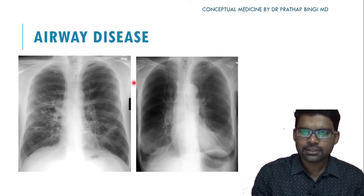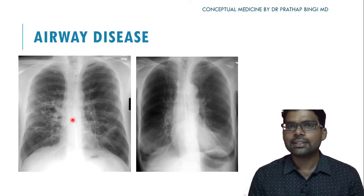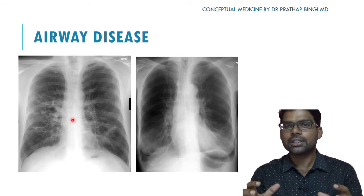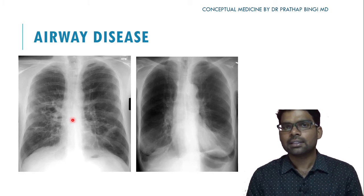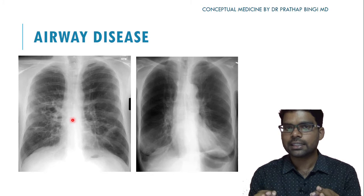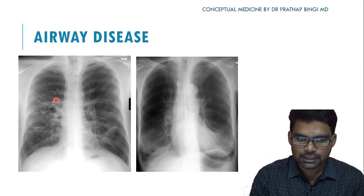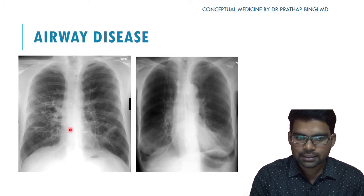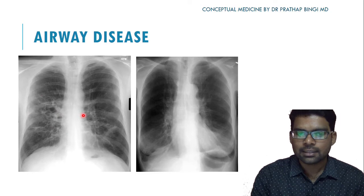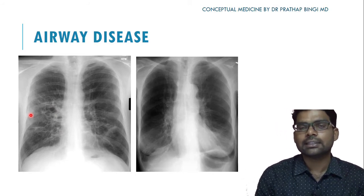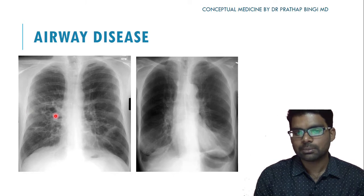Bronchiectasis is another airway disease involving chronic obstruction leading to permanent destruction and dilatation of the bronchi. The classical hallmark of bronchiectasis on chest X-ray is a honeycombing pattern. In this X-ray, honeycombing is seen in the mid zones of both lungs, more on the right side than the left, confirming bronchiectasis.